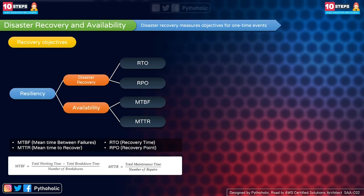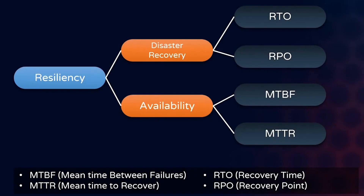Disaster recovery and availability are both important parts of the resiliency strategy. Disaster recovery focuses on how a workload responds to a disaster and how well it can recover. Availability focuses on uptime or downtime for resources over a period of time — the mean value over time. For disaster recovery, the response depends on the business objective: the recovery point objective (RPO) to avoid data loss, and the recovery time objective (RTO) to reduce downtime.